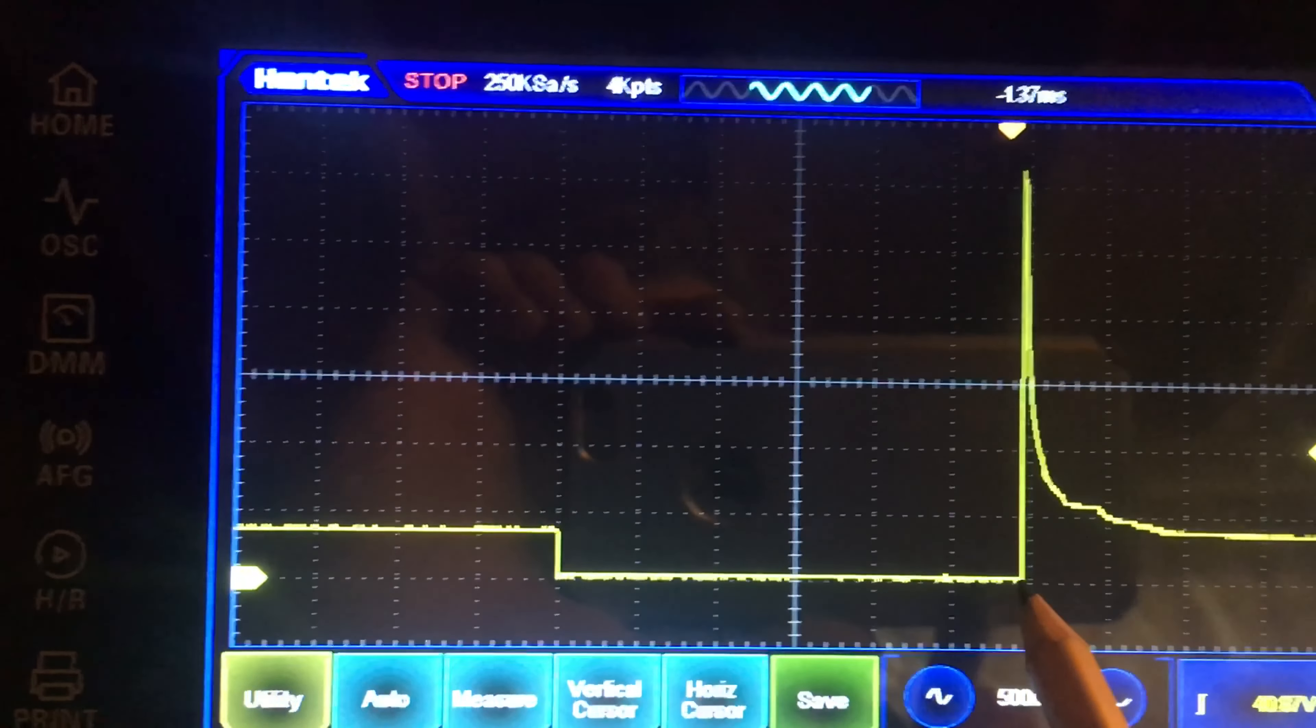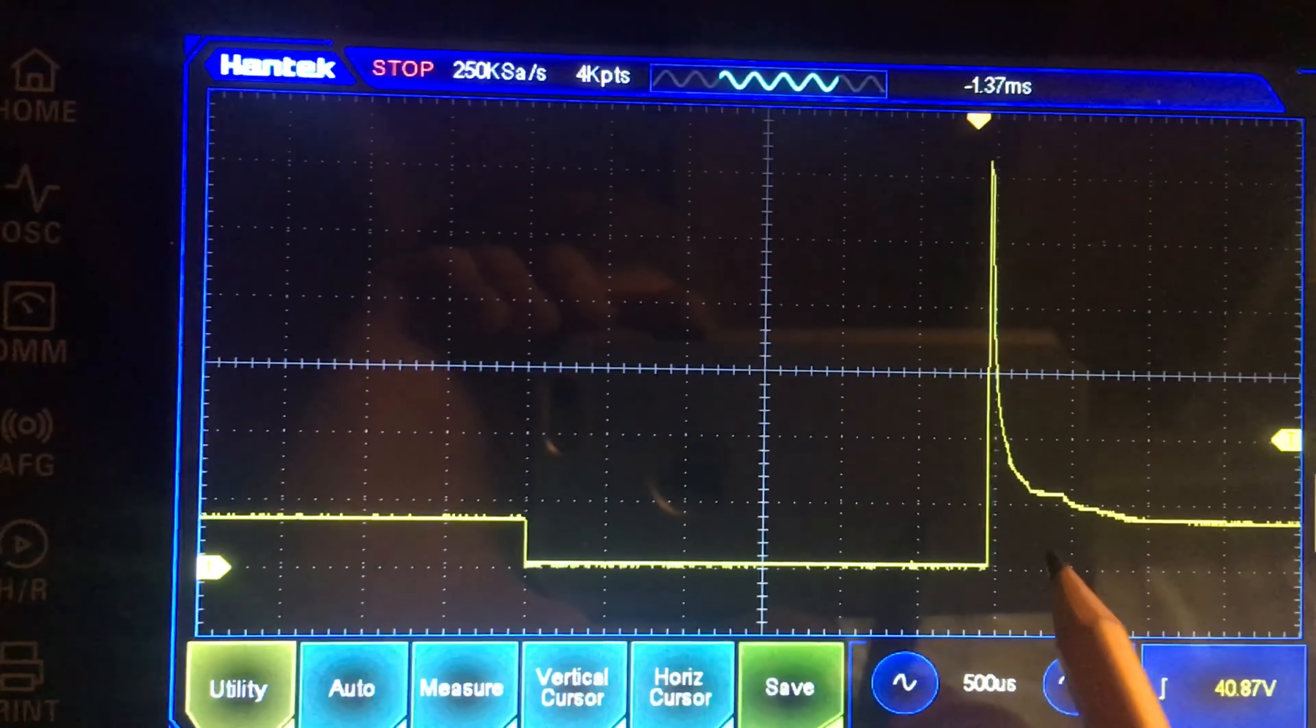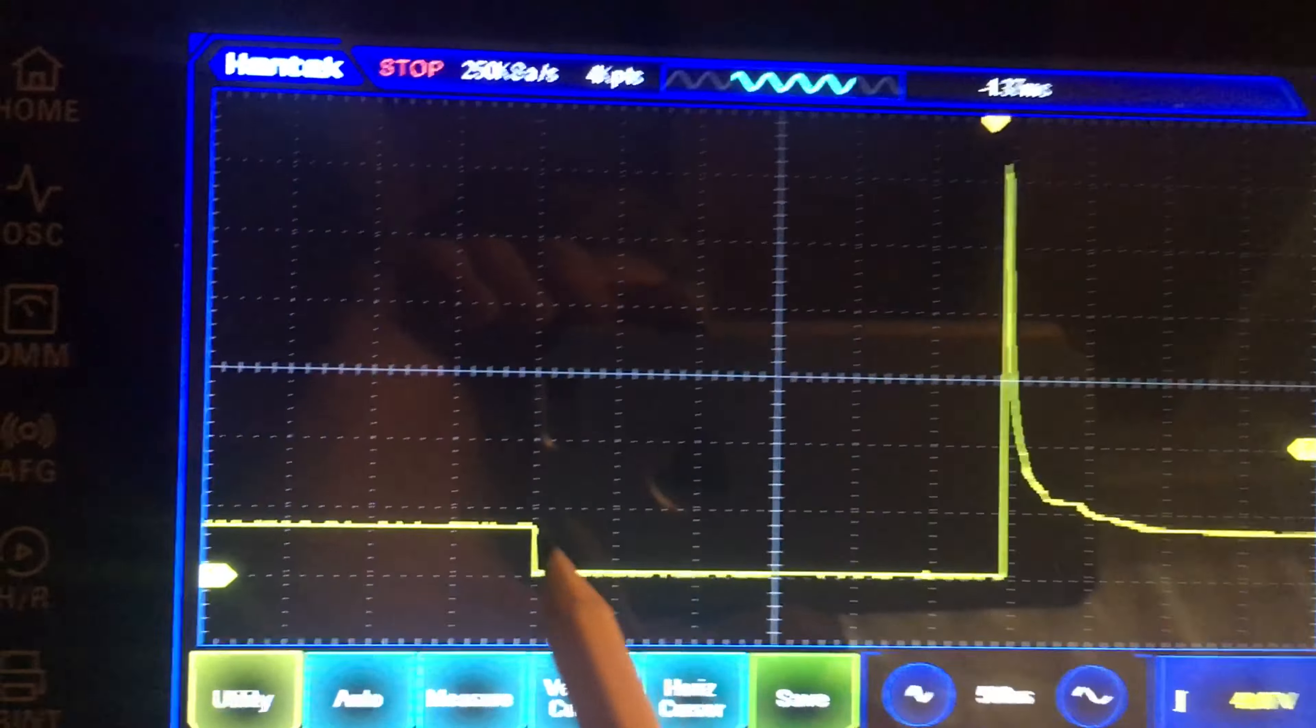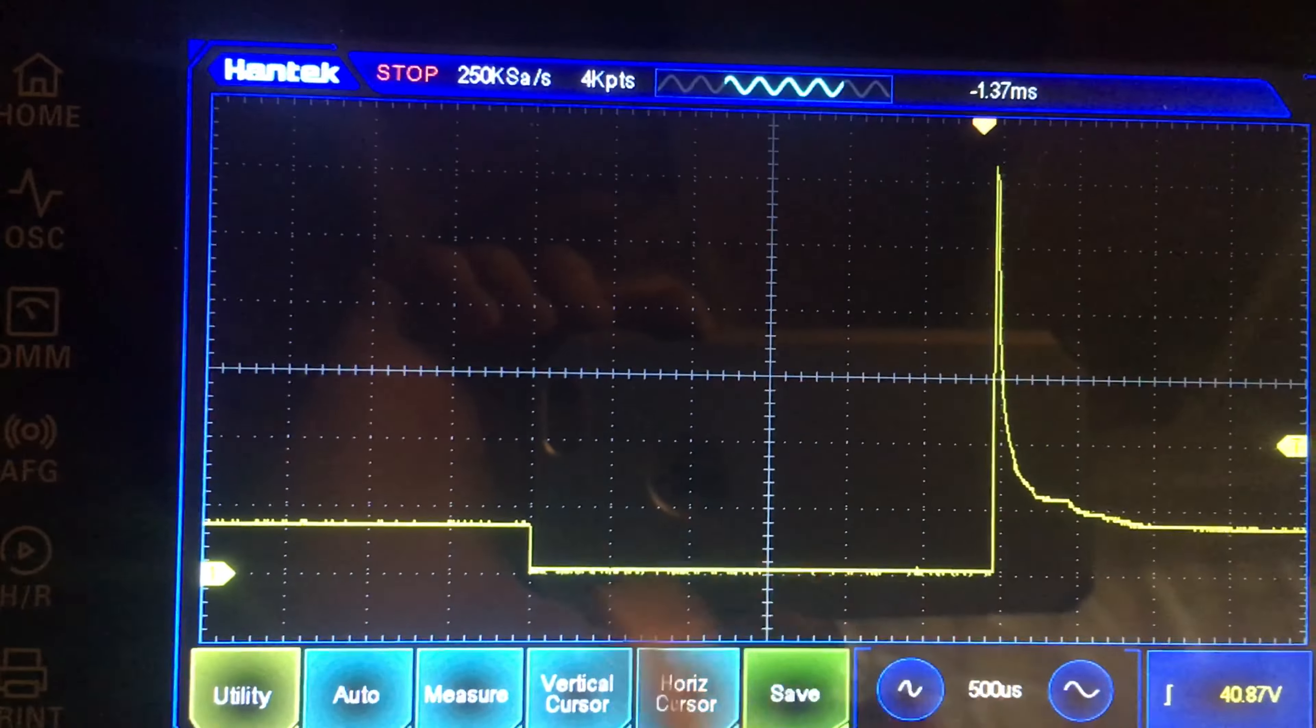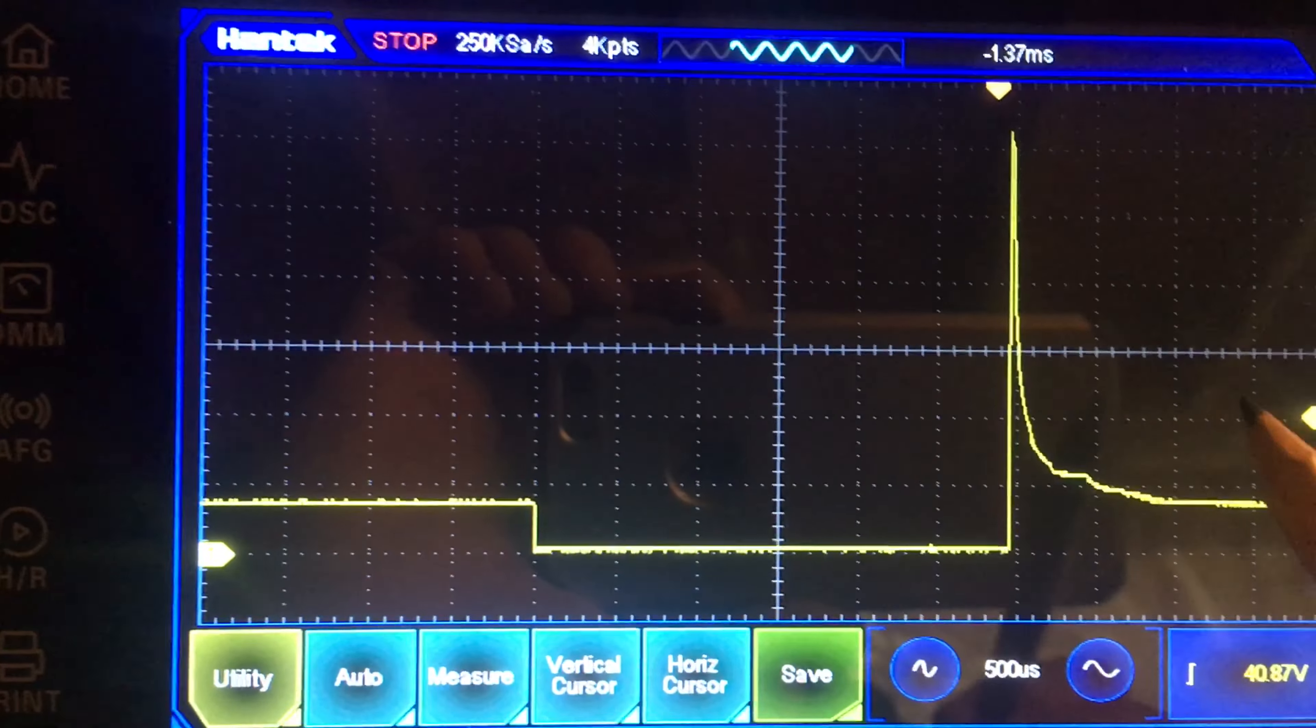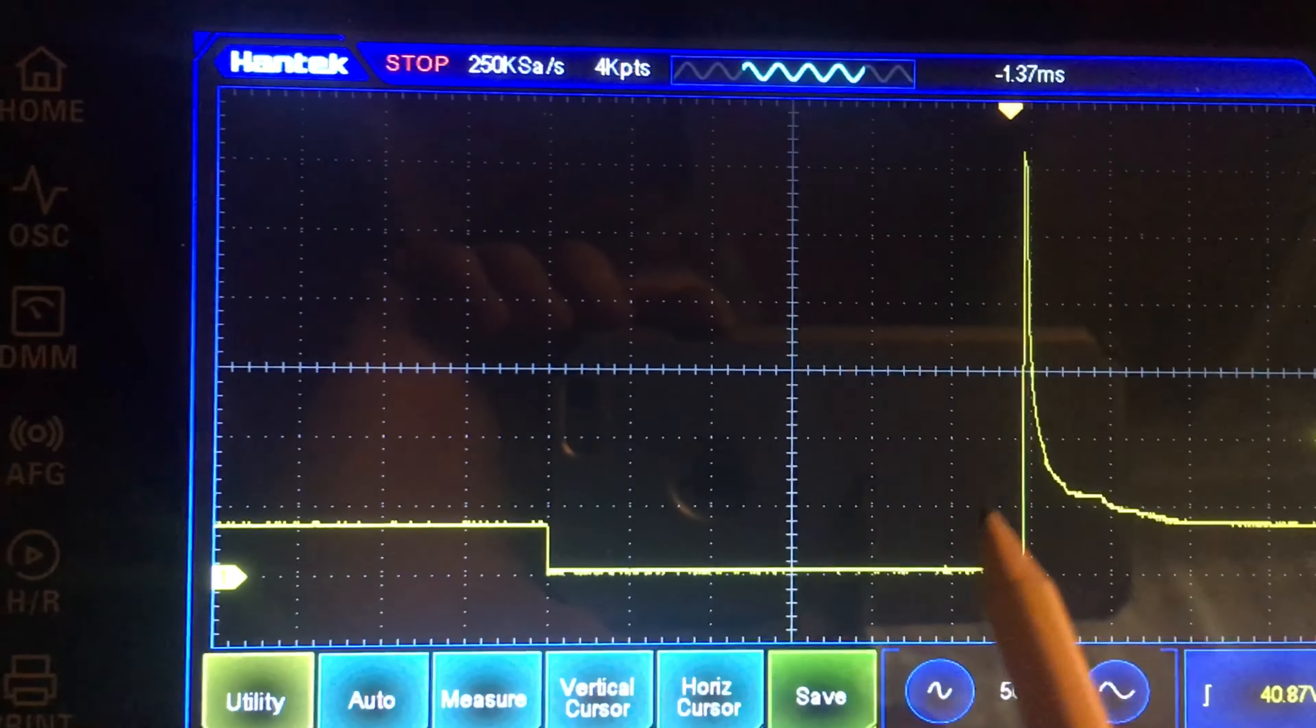This is a ground-switched rig, so once we apply the ground here, this is where the injector is energized. Now there is a difference between on-time and open-time, they're two different things when it comes to an injector. Perhaps that's a discussion for another day. But the on-time is basically dictated by how long the ground is applied to the injector.